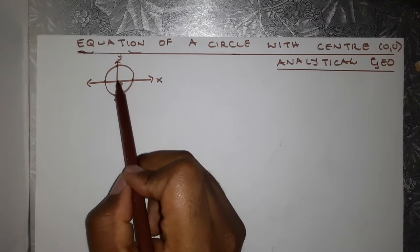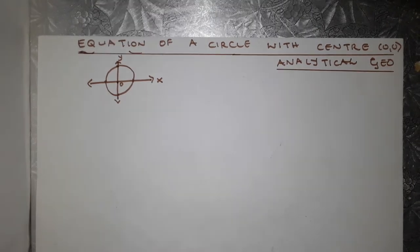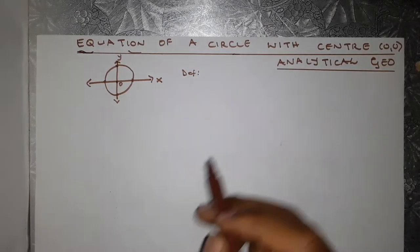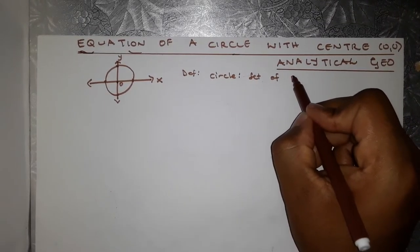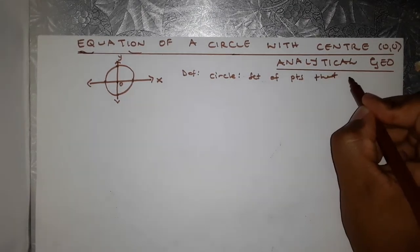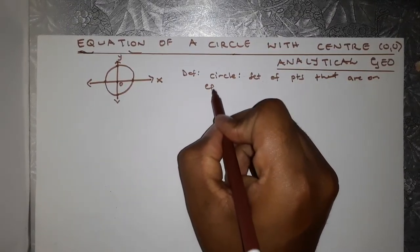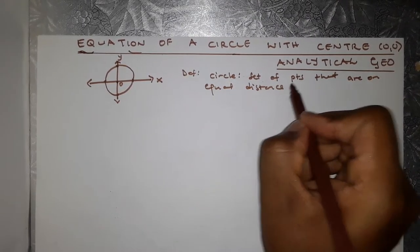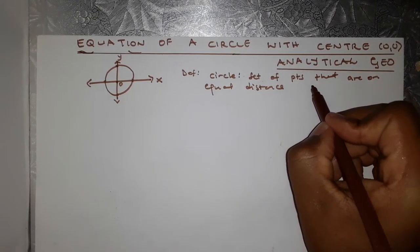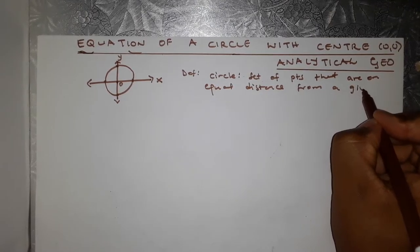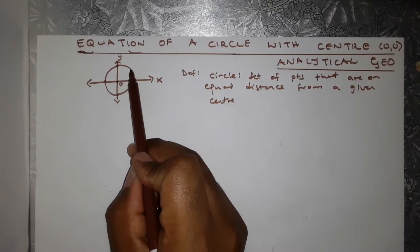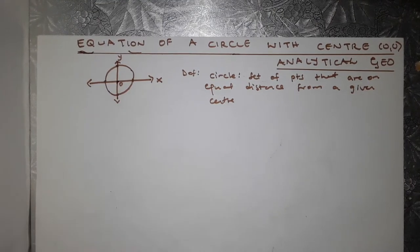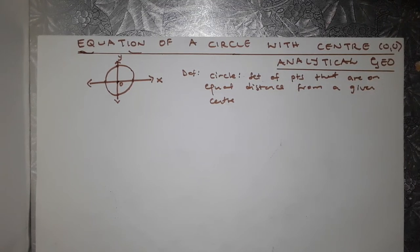This is a circle and its center is at the origin. Before we go any further, let us do some definitions. First of all, a circle is a set of points that are at an equal distance from a given center. Our circle center is at the origin, so all these points are at an equal distance from the center.